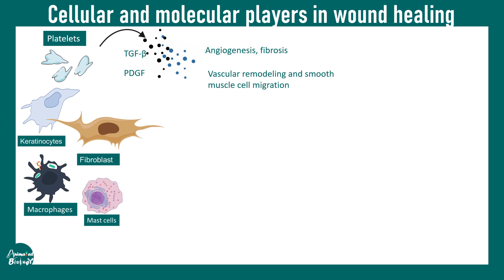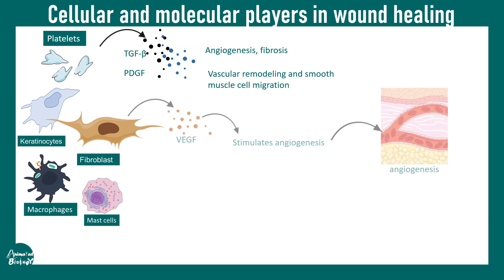There are a bunch of cells such as keratinocytes, fibroblasts, macrophages, and mast cells. All of them play an active role in the tissue repair and wound healing process. One of the key factors secreted by fibroblasts is VEGF — a growth factor that stimulates angiogenesis.